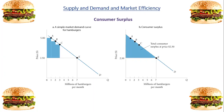On the y-axis we have the price. If we consider point A, consumers are willing to pay five dollars, however the market price is $2.50. So the consumers are achieving a consumer surplus of $2.50, which is the difference between $5 and $2.50. Since the market price of hamburgers is just $2.50, the area of the shaded triangle is equal to total consumer surplus.